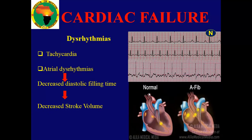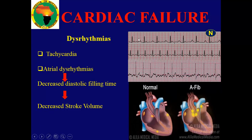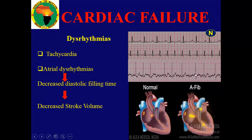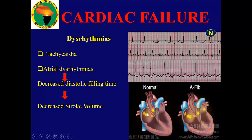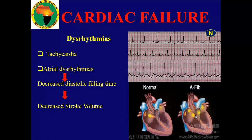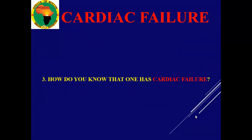Dysrhythmias are another cause. A normal heart rhythm shows equal intervals between contractions with consistent waveform shape. When the spaces between contractions become irregular, there is a problem. Looking at the electrical activity, a normal heart beats in an organized top-down pattern, but in dysrhythmia there is no coordination — it beats chaotically with no organization. These dysrhythmias can lead to heart failure as well.